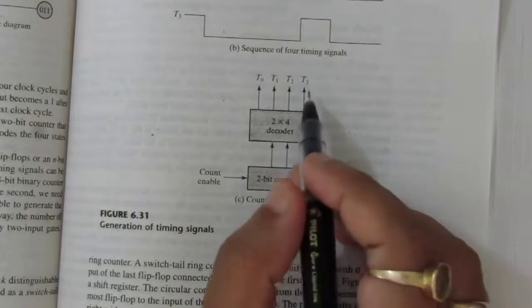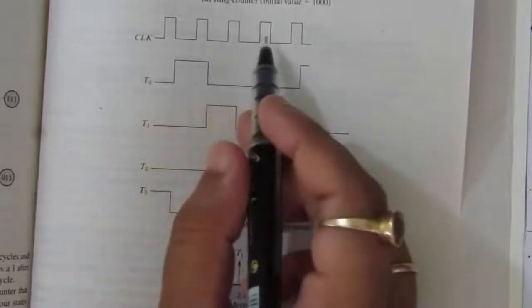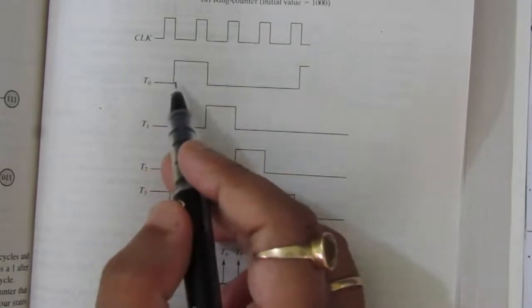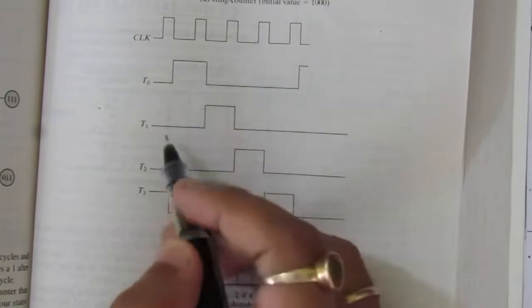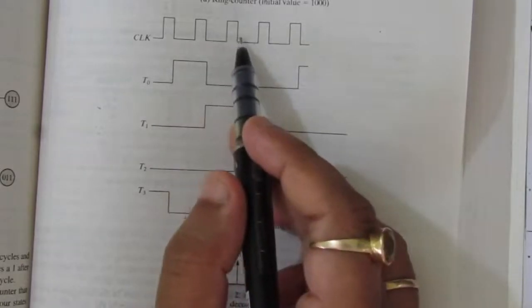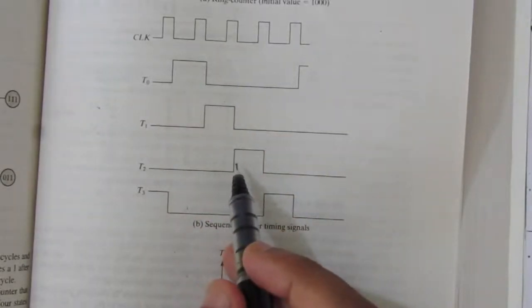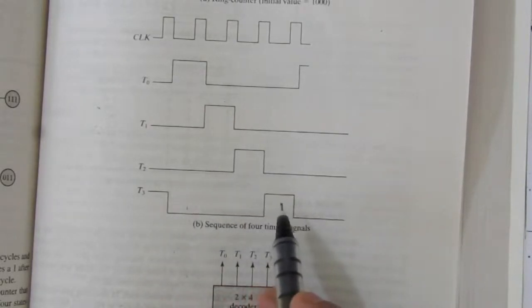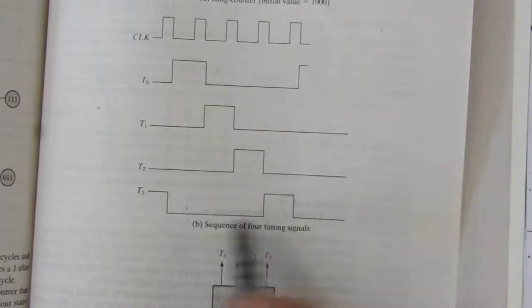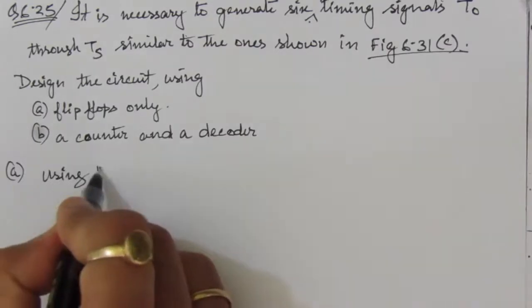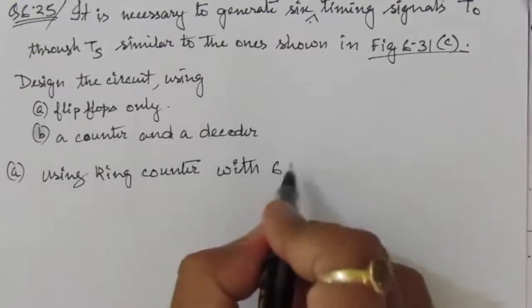For state 0,1 this T1 will have a high signal. For state 1,0 this T2 will have a high signal, and all others will be 0. For state 1,1 this T3 will have the high signal. Looking at part B, we can see the clock signal. After each negative edge, the corresponding timing signal goes high for one clock cycle — T0, T1, T2, then T3 on the fourth.